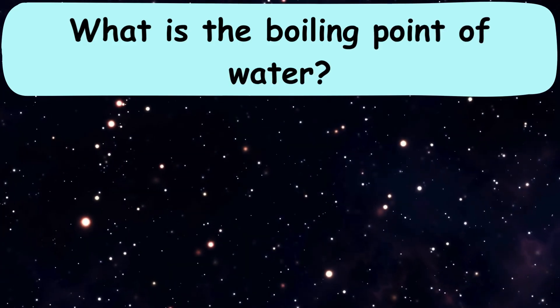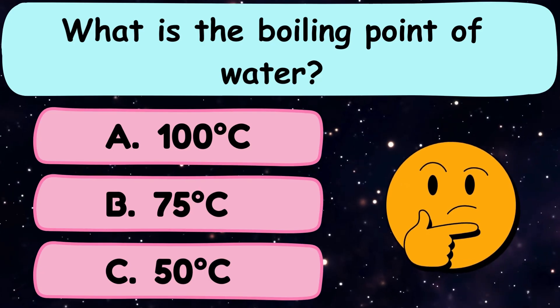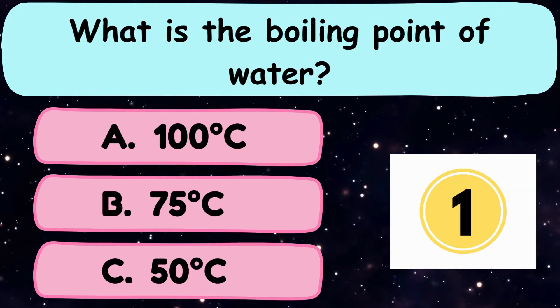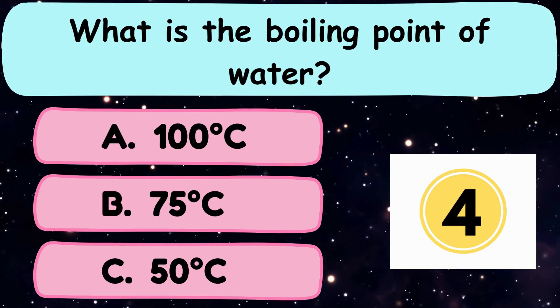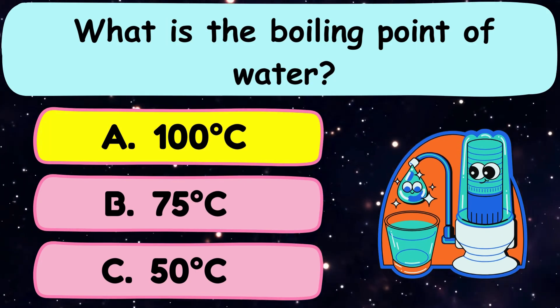Question number 30. What is the boiling point of water? A. 100 degrees Celsius, B. 75 degrees Celsius, or C. 50 degrees Celsius? The correct answer is option A. 100 degrees Celsius.